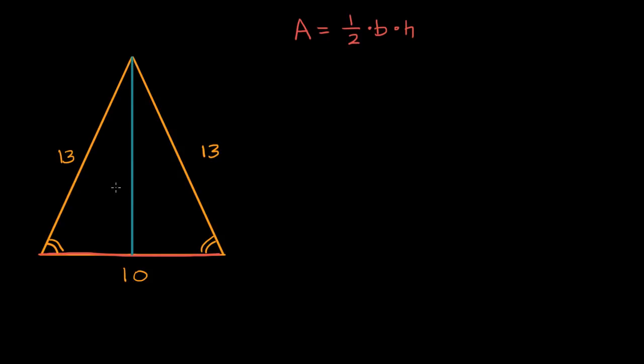We know that these are going to be right angles. If we have two triangles where two of the angles are the same, we know that the third angle is going to be the same. So that is going to be congruent to that.